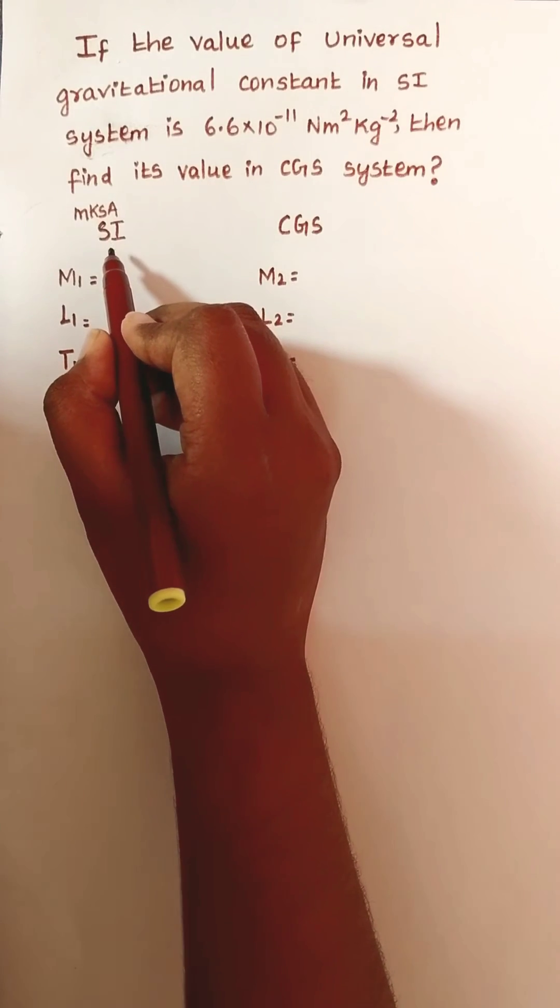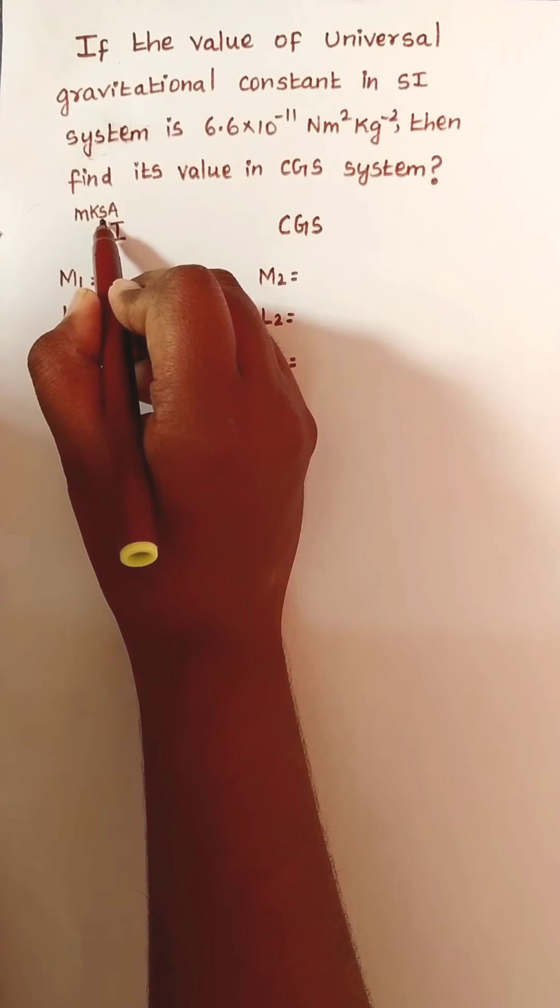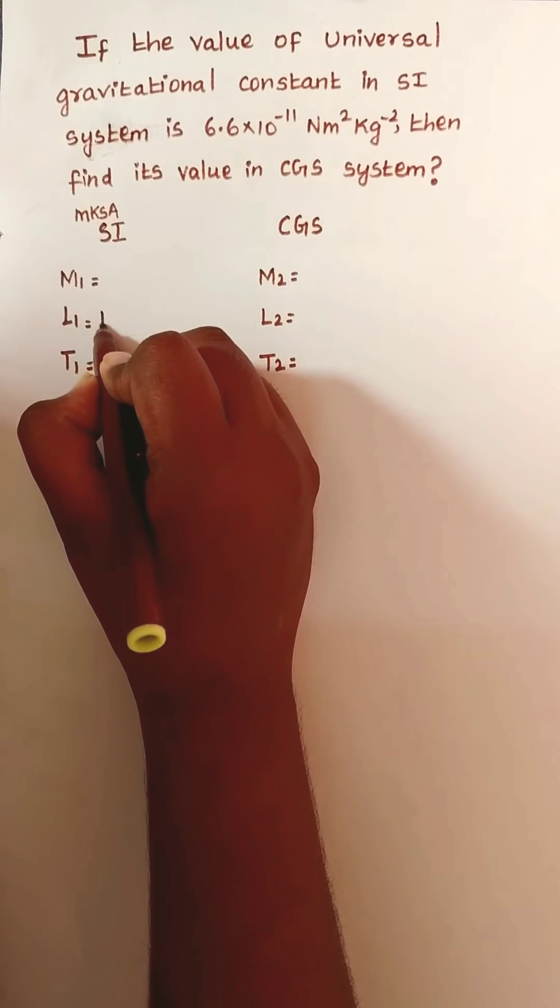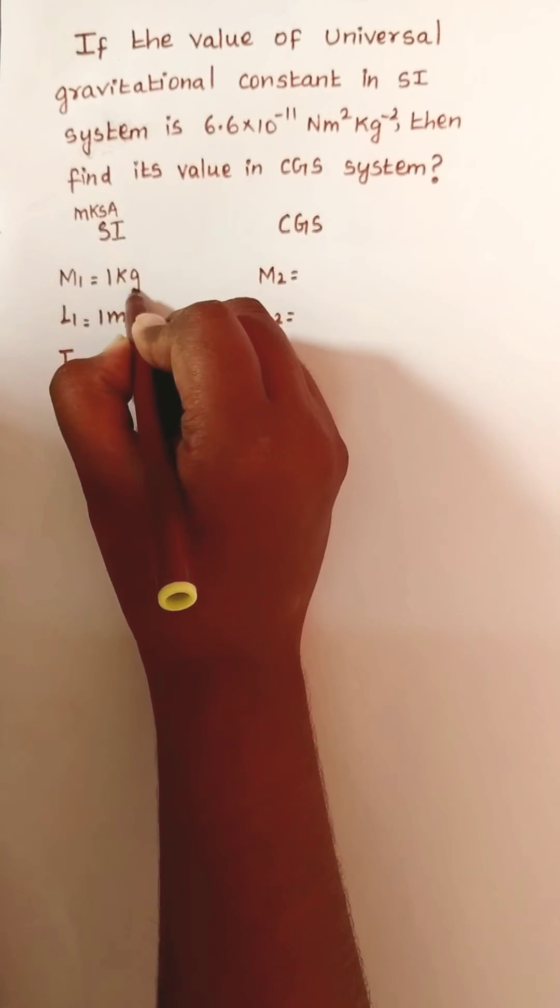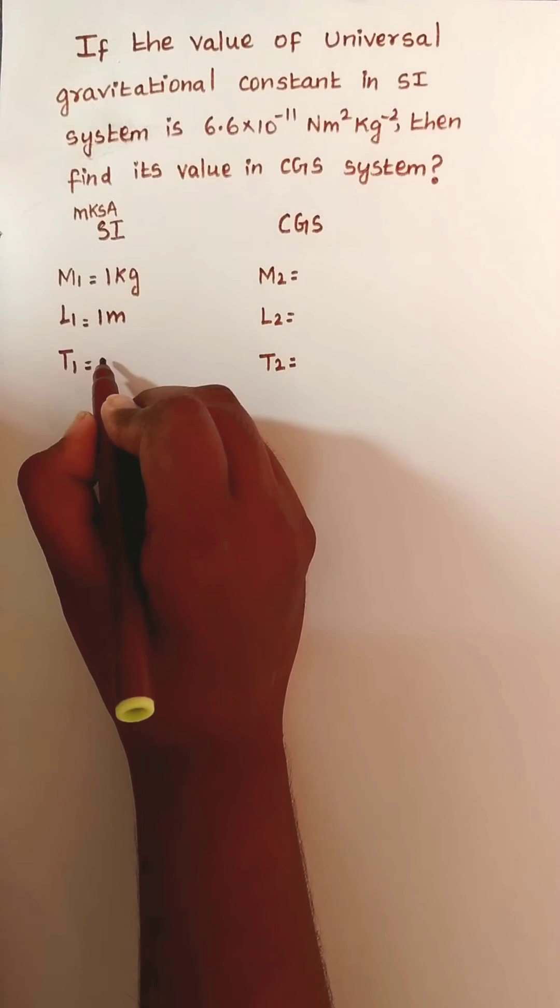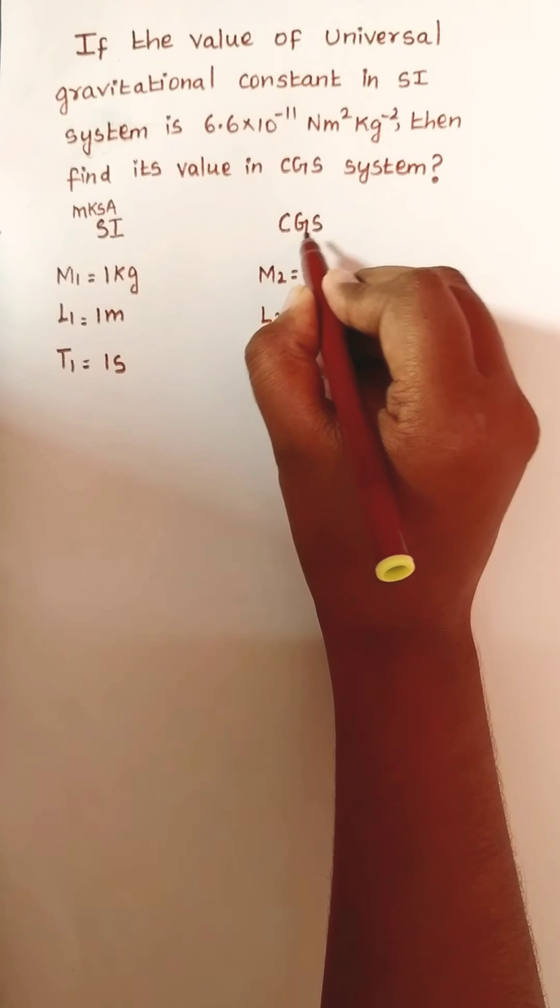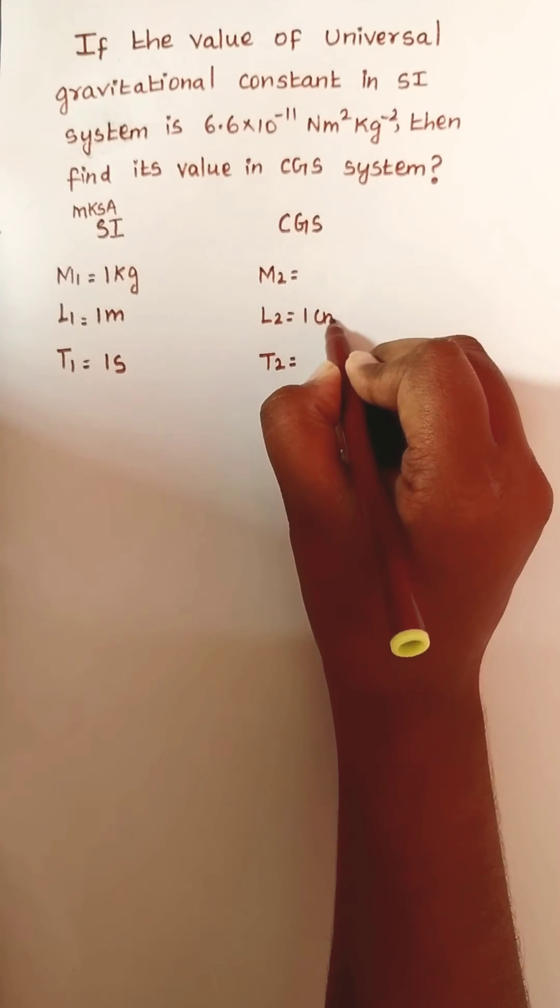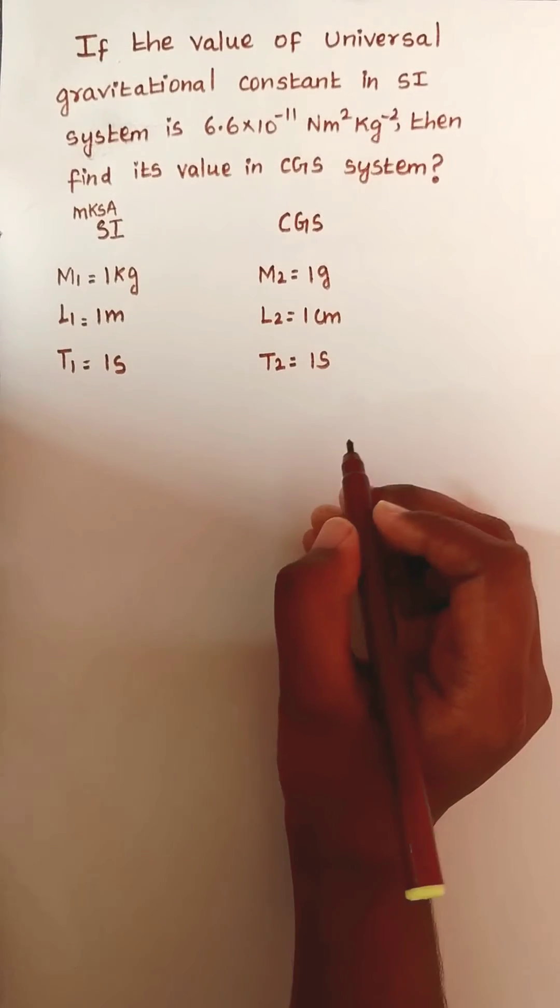SI system is otherwise known as MKSA system: M stands for meter, K kilogram, S second, A ampere. Length is 1 meter, mass is 1 kilogram, time is 1 second. Same way in CGS system: centimeter, gram, second. Length is 1 centimeter, mass is 1 gram, and time is 1 second.